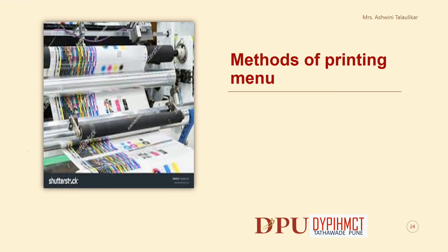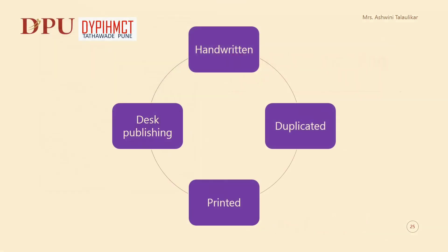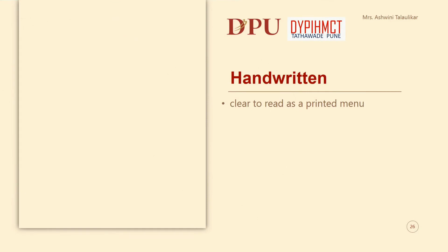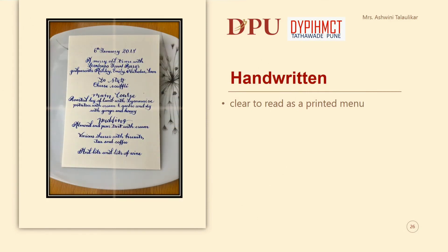In the upcoming slides we shall be discussing the various methods of printing menus. There are four methods of printing: handwritten, duplicated, printed, and desk publishing. We shall be discussing each one in the further slides. Handwritten menus should be clear to read as a printed menu.